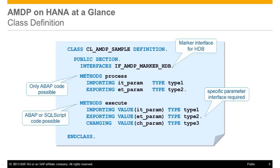Methods with returning parameters cannot be implemented as AMDP. Additionally, the method parameters have to be tables or scalar types and have to be passed as values. In the present example, the method 'process' cannot be implemented as AMDP because the parameters are not passed as values but as references. Concerning the method 'execute', it meets all the AMDP prerequisites and therefore can be implemented either as an AMDP method or as a regular ABAP method.